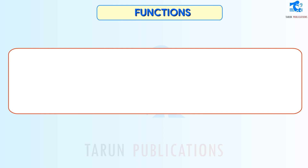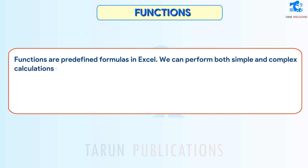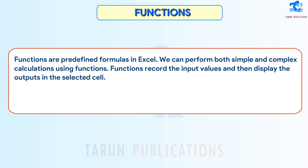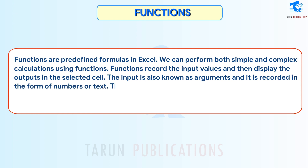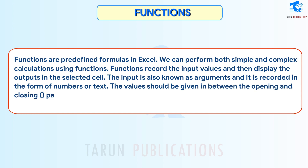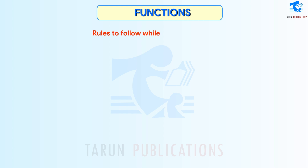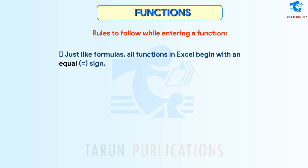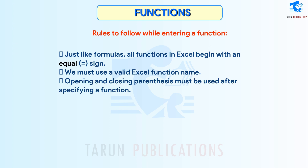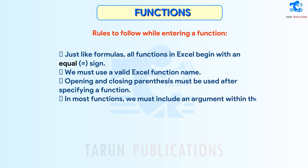Functions: Functions are predefined formulas in Excel. We can perform both simple and complex calculations using functions. Functions record the input values and then display the outputs in the selected cell. The input is also known as arguments, and it is recorded in the form of numbers or text. The values should be given in between the opening and closing parentheses. Rules to follow while entering a function: just like formulas, all functions begin with an equal sign; we must use a valid Excel function name; opening and closing parentheses must be used after specifying a function; and in most functions, we must include an argument within the parentheses.